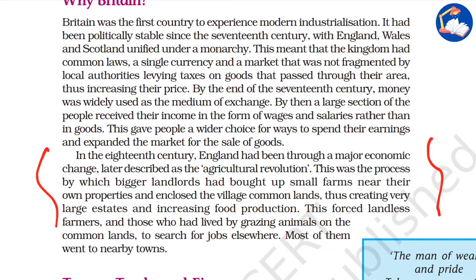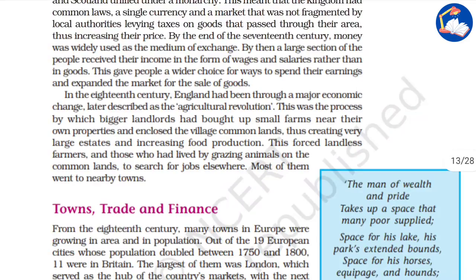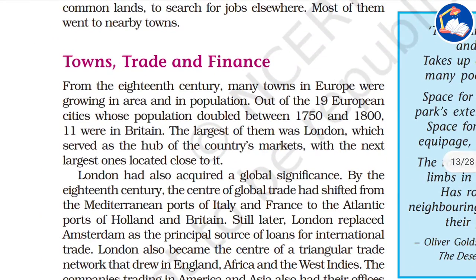In the 18th century, England had undergone a major economic change later described as an agricultural revolution. This was a process by which bigger landlords bought up small farms near their own properties and enclosed village common lands, creating very large estates. Farming was developed on a large scale, along with growth in towns, trade, and finance.